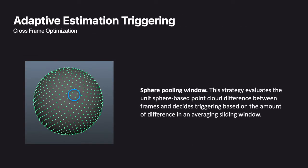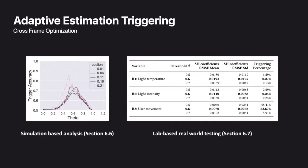Our system also reduces unnecessary estimation across frames using an adaptive estimation-triggering strategy. This strategy uses a sphere-pooling window to evaluate the unisphere-based point cloud difference between frames and decides triggering based on the amount of color value differences. We demonstrate the effectiveness of the triggering strategy based on both simulation experiments and lab-based real-world testing, testing both the triggering accuracy and the triggering threshold robustness. By controlling three key parameters — temperature, intensity, and user movement — we showed that our triggering strategy can reduce a large number of unnecessary estimations without producing significant mismatch, both numerically and visually.